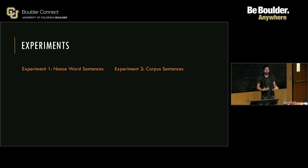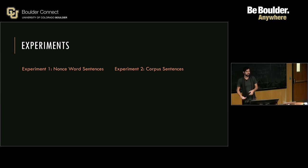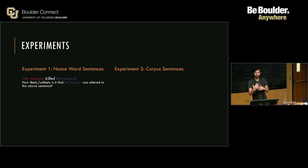They really did this in two experiments. Experiment one used sentences with nonce words — utter random nonsense words. And the second experiment used corpus sentences — real sentences that someone wrote down. An example of experiment one would be: 'The Negler killed the Bogrub.' And then the question attached to it would be: 'How likely or unlikely is it that the Bogrub was altered in the above sentence?' They asked all of their scalar questions per example, but that gives you a sense of how it looks with a single question.